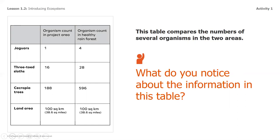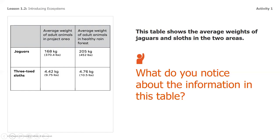This next table shows the average weights of jaguars and sloths in the two areas — one in the project area and the other in the healthy rainforest. We will be comparing those two sets of data. Think back to the information about the number of living things and the weights in the project area and in the healthy rainforest area. What do you think is meant by the animals not growing and thriving in the project area? That is going to be our job as ecologists to figure out — why aren't they growing, why aren't they thriving, what are they missing?